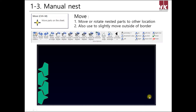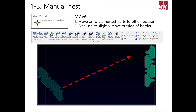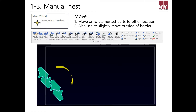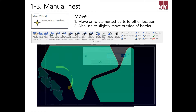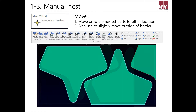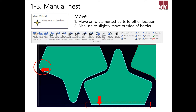The move function is for moving nested parts into other positions or rotating them. You can also slightly move nested parts out of the border to use the sheet tightly and insert small parts. To do this, input a value in the movement value field to set the moving distance each time, and press ALT plus arrow key.